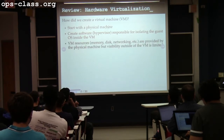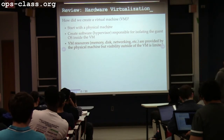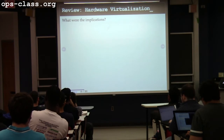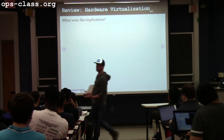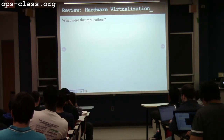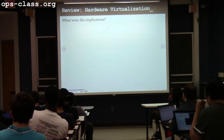The VM resources are provided by the physical machine, but the visibility outside of that physical machine of those virtual resources is limited — this is by design. What were some of the implications of these design choices on the virtual machine itself? Someone mentioned virtualizing the instruction set. But what's the relationship between the virtual machine and the physical machine — what's true about it as a consequence of how we've chosen to virtualize?